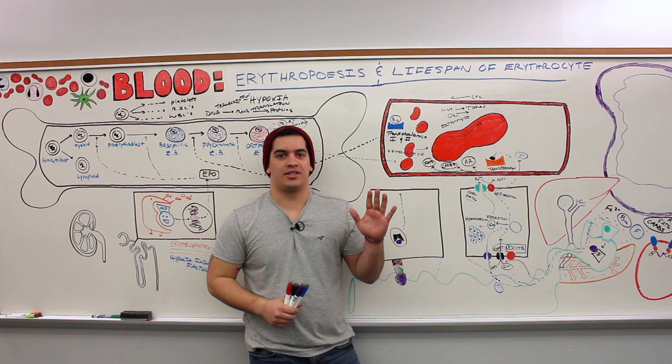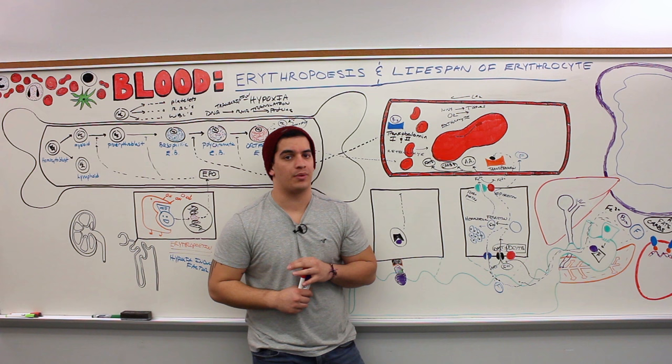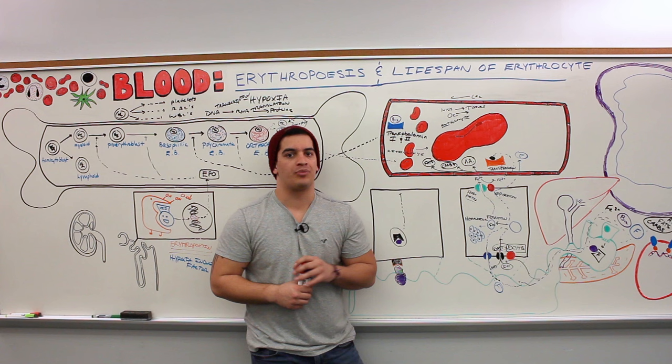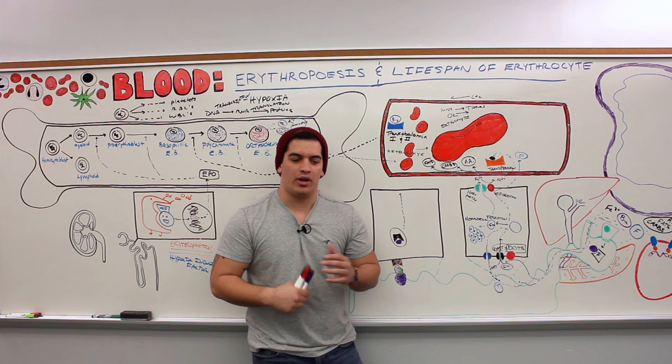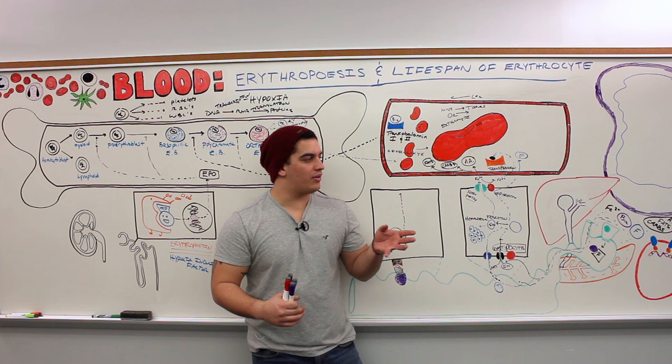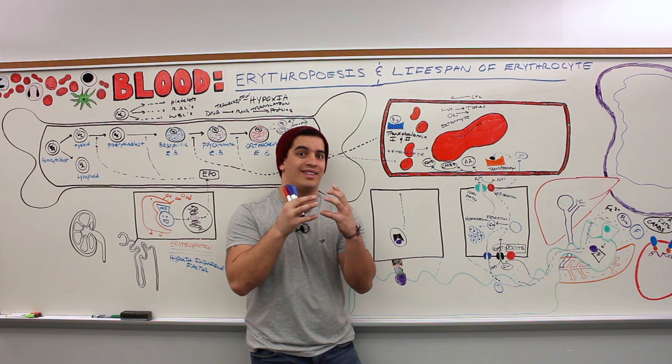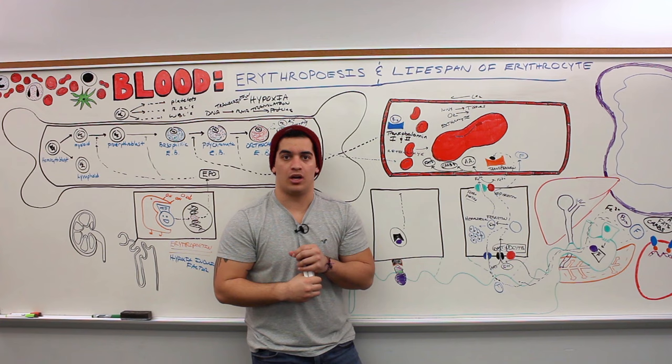Let's go ahead and finish up the rest of this video and go over the entire lifespan of the erythrocyte. The erythrocyte usually only survives, or has a lifespan, of about 100 to 120 days. Why does it start wearing down after that amount of time? Before we go into that, we need to understand the normal cytoskeletal structure of a red blood cell so we can describe what's happening and why this destruction pathway is occurring.